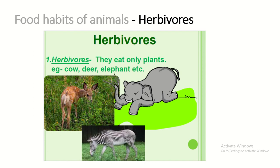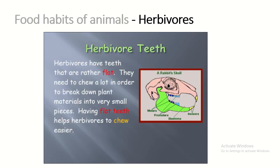Herbivores. 'Herbi' means Jadibuti — a part of a plant. So, herbivores are those animals that eat only plants. For example, cow, deer, and elephant, as you can see in the images. Herbivore teeth: herbivores are animals that can chew food easily, so they have flat teeth.